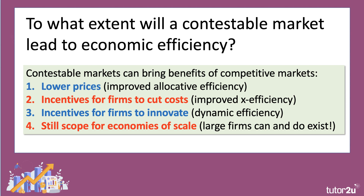Another aspect of contestability is that there's a great incentive for firms to cut their costs. If there's an existing firm that's being inefficient, a new firm could potentially take advantage of that and enter the market and take away some market share — we call that hit and run entry. So if the market is really competitive day to day, there's quite a strong incentive for businesses to cut their costs, and therefore we'll get less X inefficiency, hence improved X efficiency.